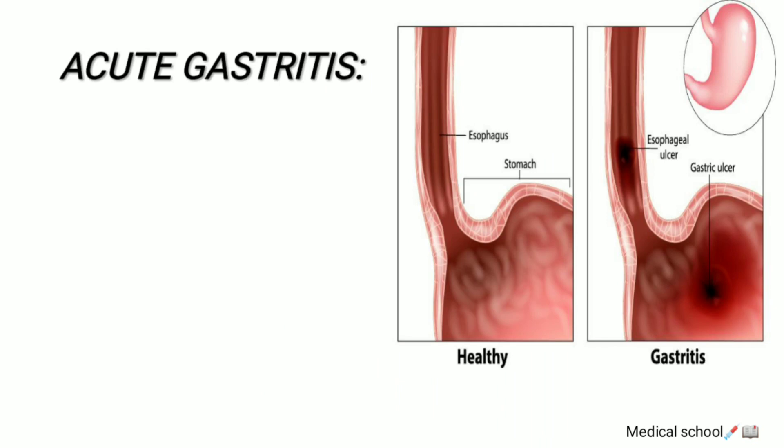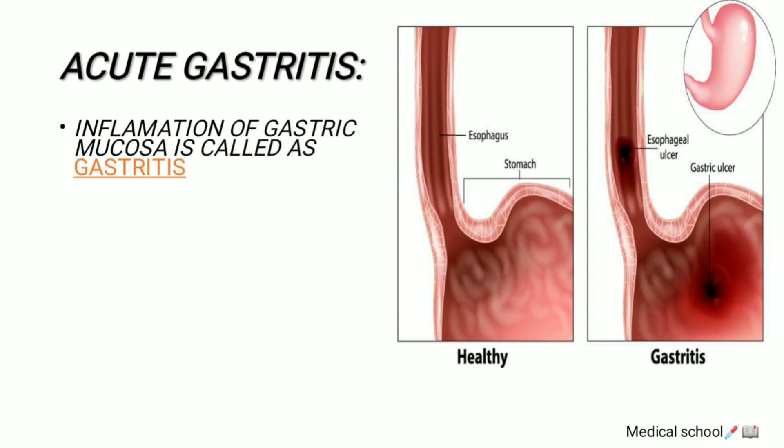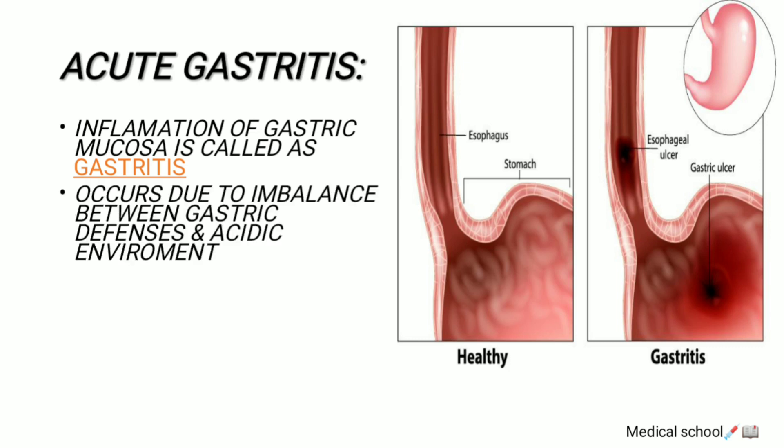The word 'acute' means sudden in onset, and wherever the word '-itis' is used, that means inflammation. So basically this name suggests inflammation of the gastric mucosa, and it occurs due to an imbalance between the gastric defenses and the acidic environment. So what do we mean by gastric defense?